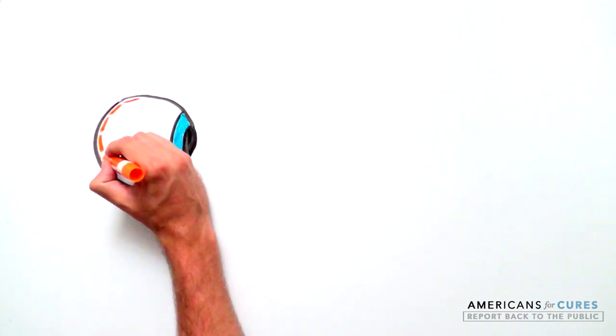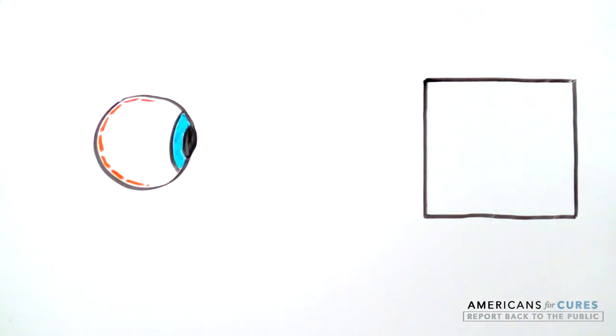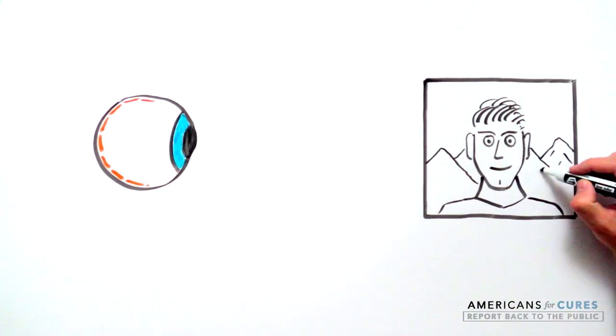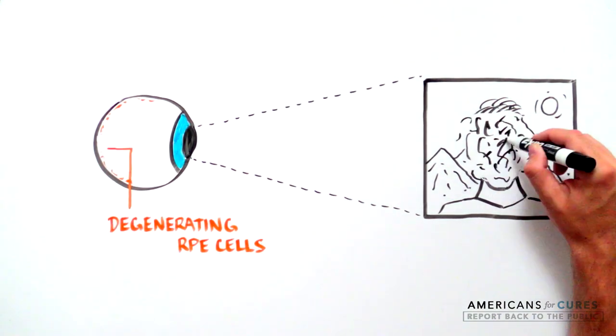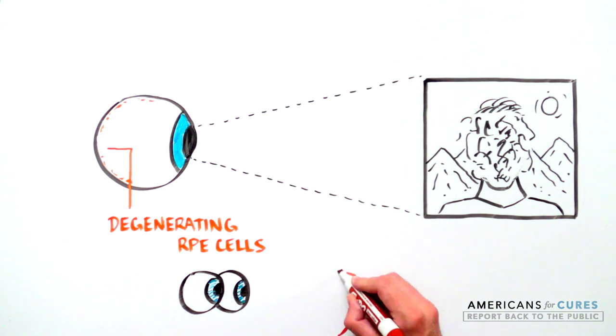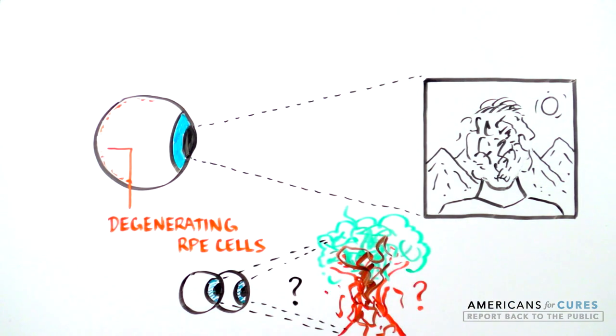Without such support, light-sensing cells in the eye degenerate, and vision loss occurs. Over time, patients with AMD lose high-acuity vision and see only distorted or blurry images, losing the ability to discern objects or faces in their central vision.